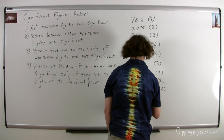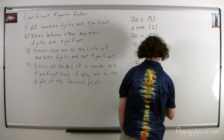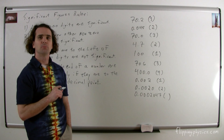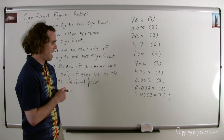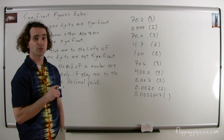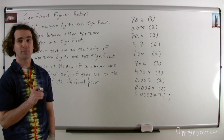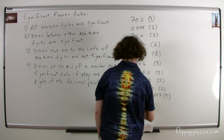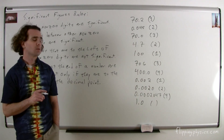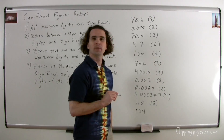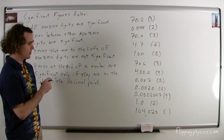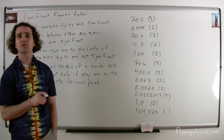Let's try a couple more. Bo, how about 0.0002047? Four. Bobby, 1.0. Two. Billy, 104,020. Five.